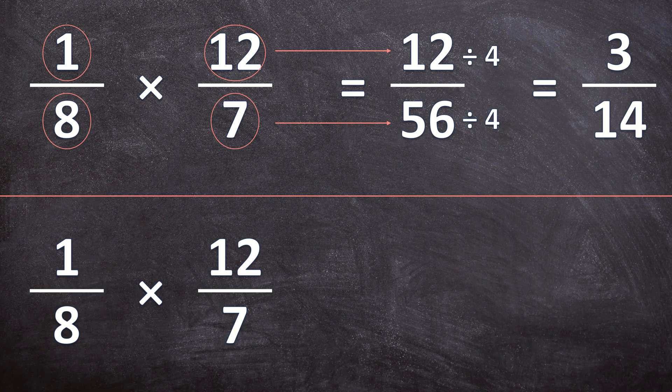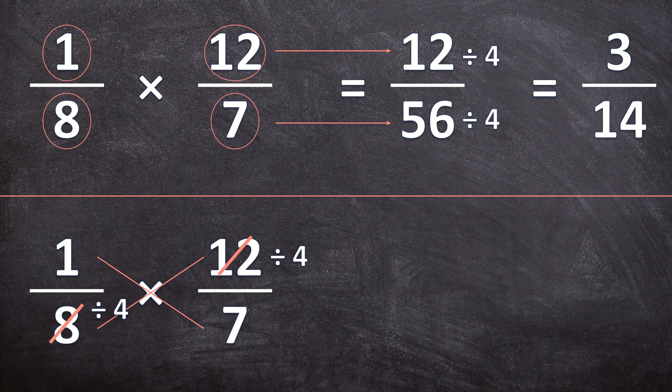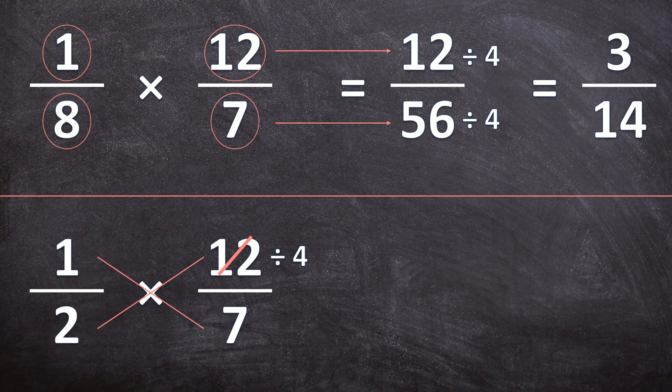So I'm going to see, is there anything I can divide the 1 and the 7 by to simplify them? There's nothing I can divide the 1 and the 7 by. So now let's look at the 8 and the 12. Can I divide the 8 and the 12 by something, by a number? To simplify those two numbers, yes, I can divide them both by 4. So my simplified fractions is going to be 1 over 2 times 3 over 7.